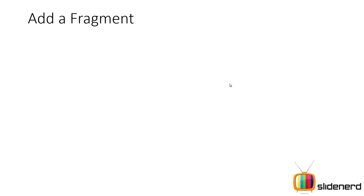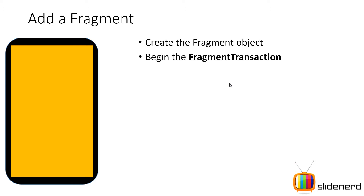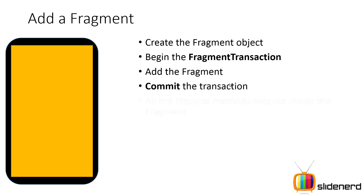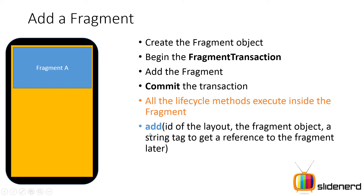Let's talk about adding a fragment. You have your activity — you create the fragment object, then begin the fragment transaction. Within the transaction you add the fragment, commit the transaction, and all the lifecycle methods execute inside the fragment when you add it to the activity, because it is just like declaring the fragment inside your XML.